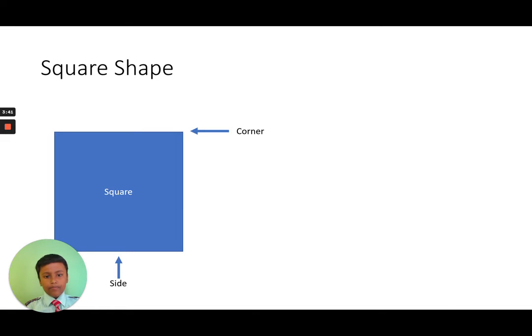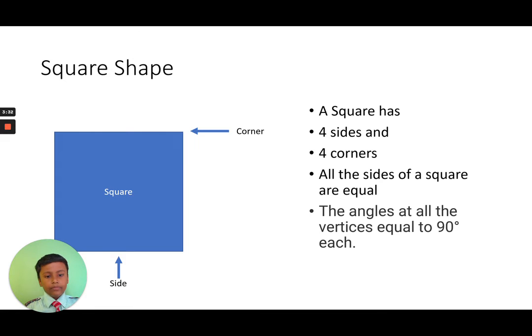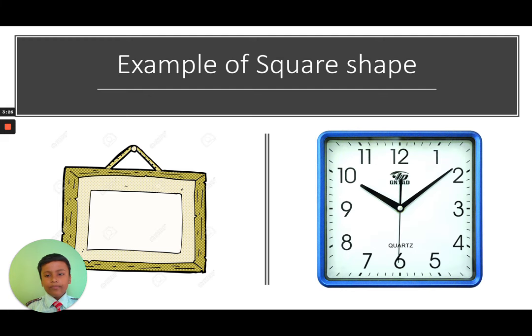Square shape: A square has four sides and four corners. All the sides of a square are equal. The angles at all the vertices equal 90 degrees each. Examples of square shapes include photo frames and clocks.